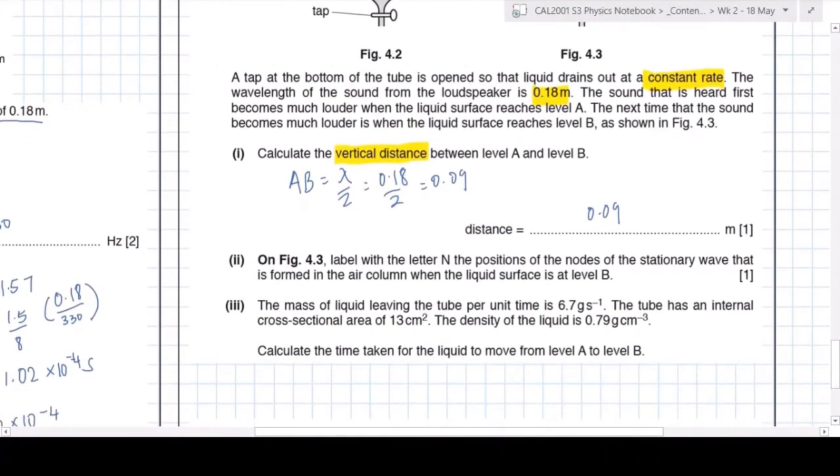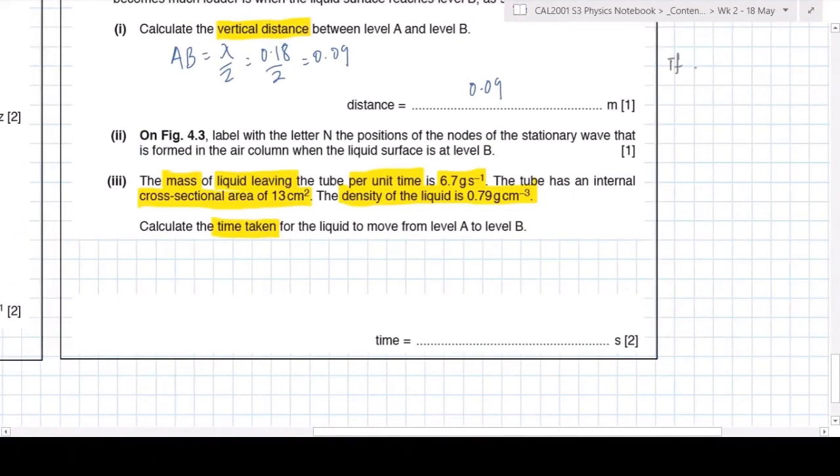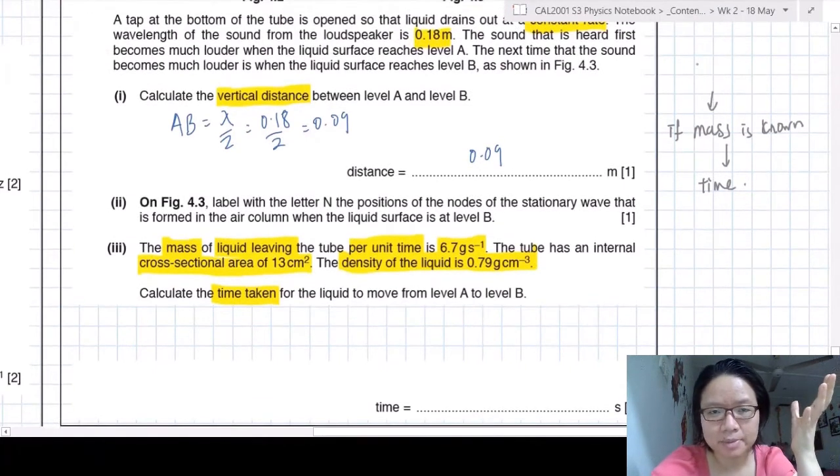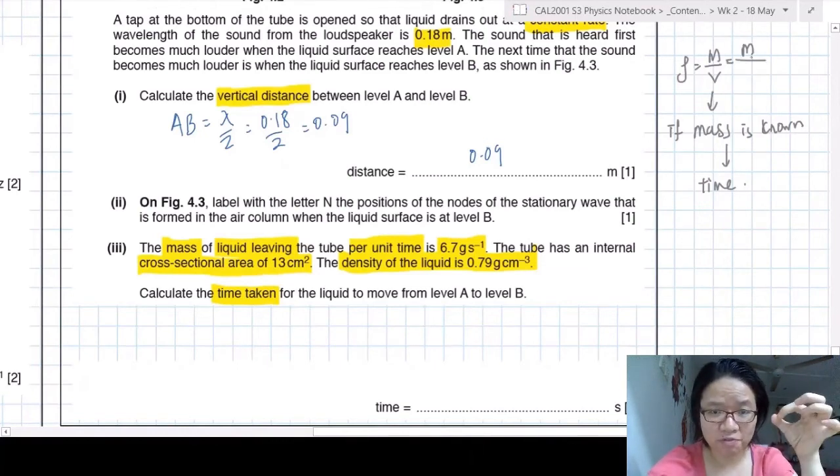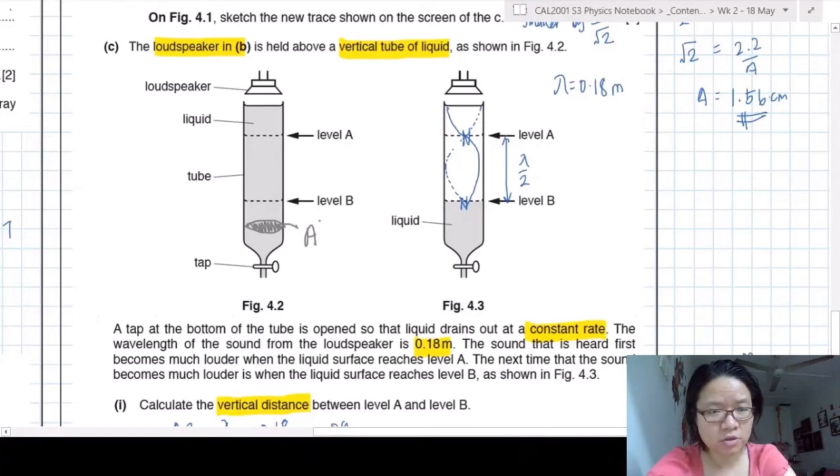Because you just add in the lambda over 2. So label the nodes. I have. Label with letter N the nodes. The mass of the liquid leaving the tube per unit time is 6.7 grams per second. The tube has an internal cross-section of 13 centimeters square. Density 0.79 grams per cm. Calculate the time taken for the liquid to move from level a to level b. So my friends, this got a question. You should just stop and think a bit. If you know the mass, you can find the time. To find the mass, you have density. So you need volume. And volume of the air column would be cross-sectional area times length. So I'm just going to label the cross-sectional area here for you in figure 4.2. So basically what happens is that the water will fall from level a to level b. And this is the length L. That is the volume of the water that fell. So I'll just take A times L.